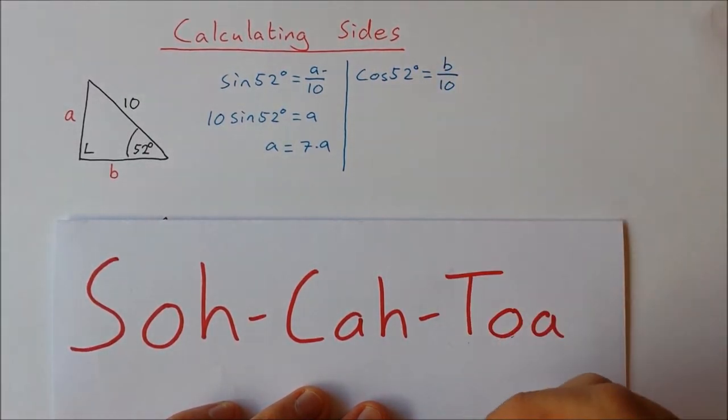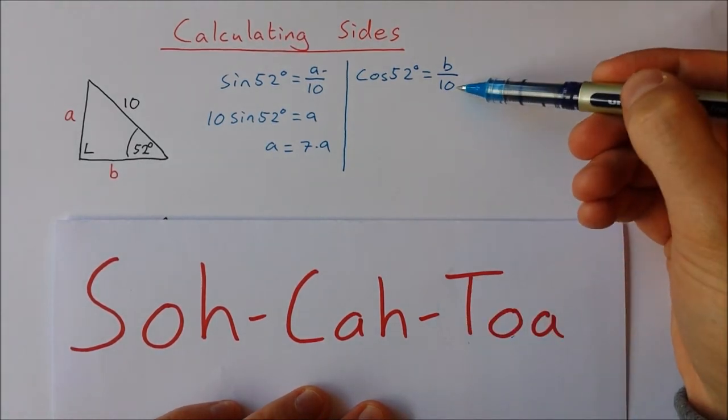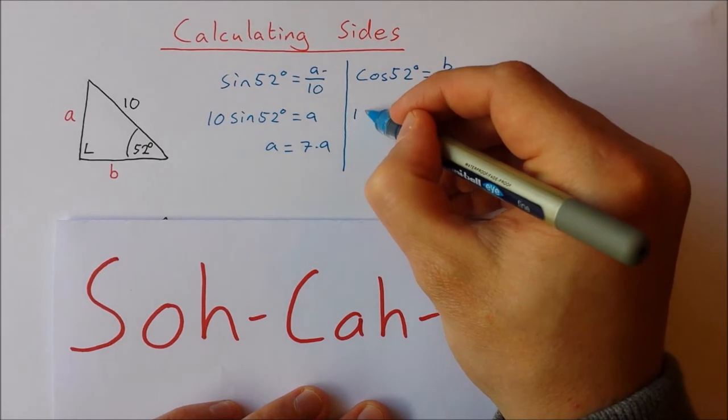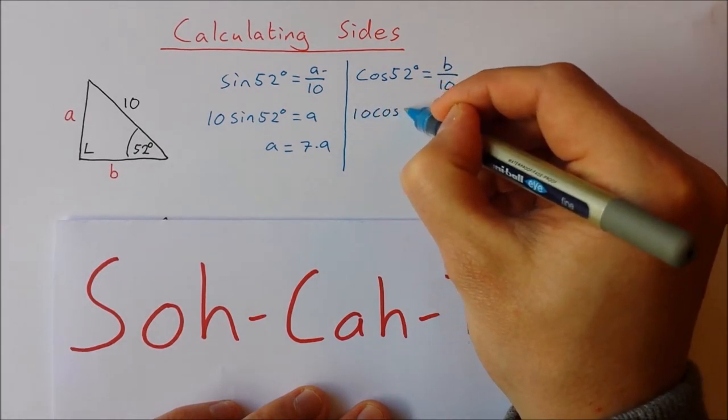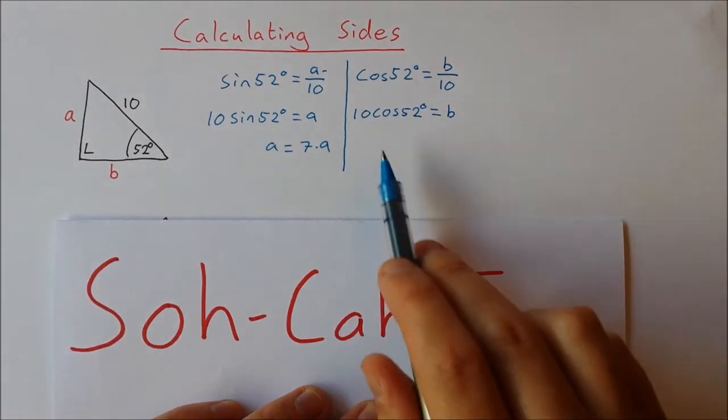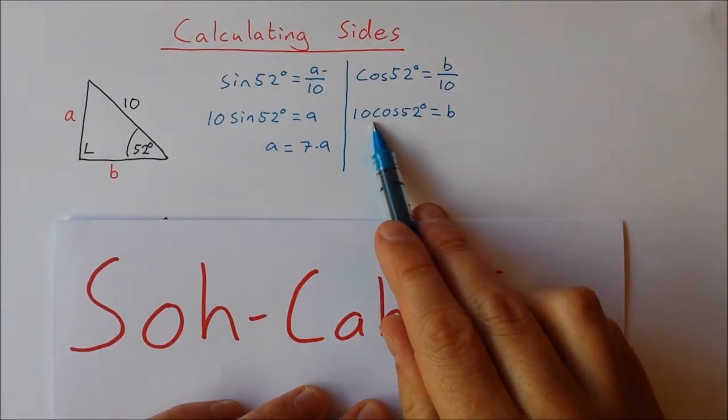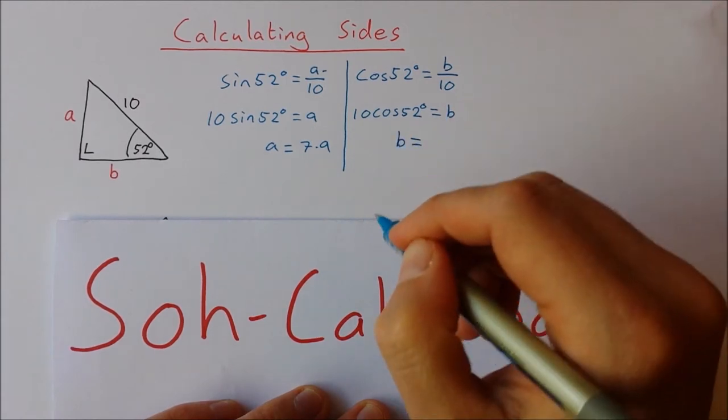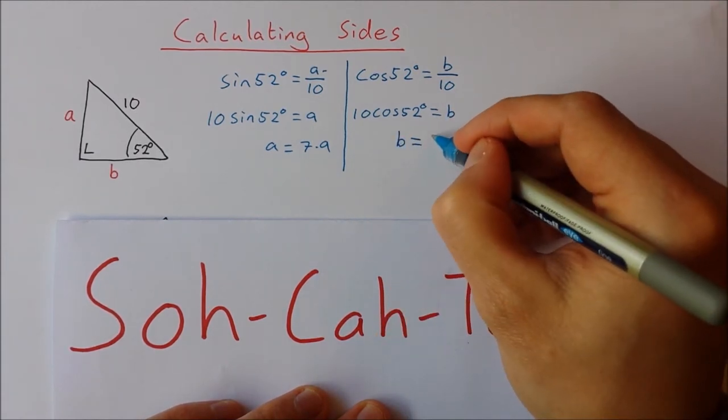Same thing, I'm going to multiply across by 10 so that I isolate 'b'. So 10 cos(52°) = b. You type this straight into your calculator: 10 cos 52 equals, and you end up getting b = 6.2.